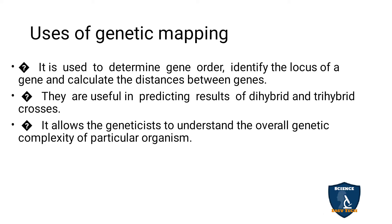The uses of genetic mapping — important for a 3-mark answer — are as follows. First, gene order, location of the gene, and distance between genes can be easily determined. Second, it is easy to predict dihybrid and trihybrid cross ratios. Third, it helps geneticists understand the overall genetic complexity of a particular organism.